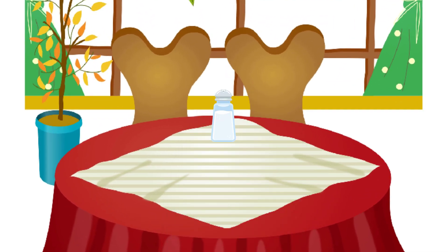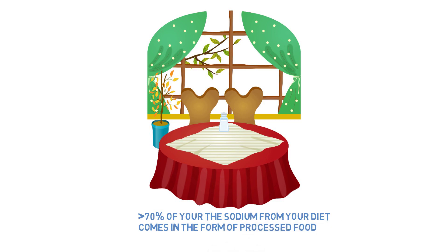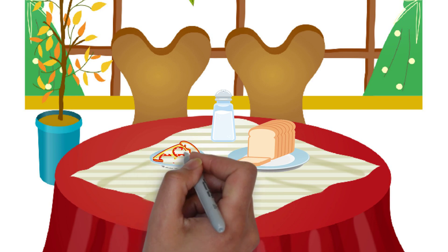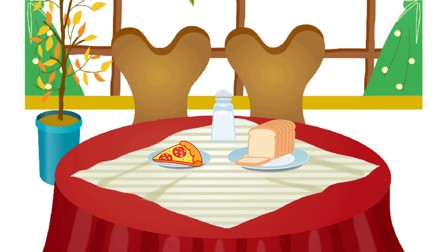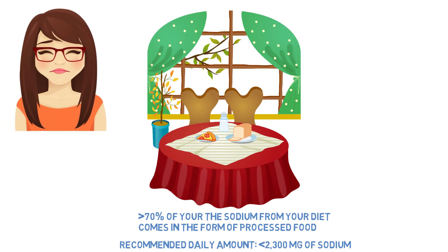Moreover, let's talk about sodium. When people think of sodium they automatically think of salt, as 40% of salt is sodium. However, it is a common misconception that table salt is the biggest sodium contributor in your diet — more than 70% of your sodium comes from processed food. For example, one slice of bread can contain 80 to 230 mg of sodium, and a slice of pizza can contain between 370 and 730 mg. The 2015–2020 Dietary Guidelines for Americans recommend consuming less than 2300 mg of sodium daily, as most adults consume more than 3400 mg per day, putting them at risk for high blood pressure and stroke.